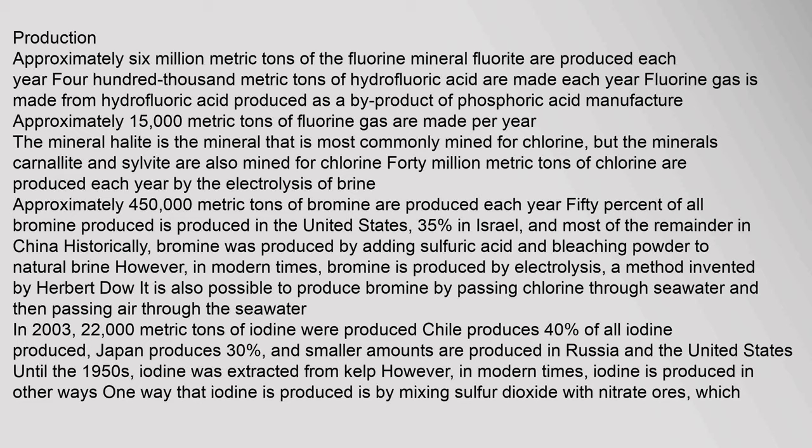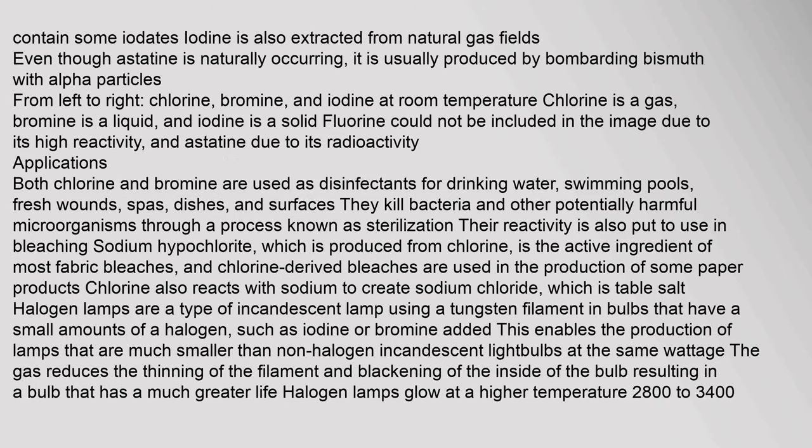Historically, bromine was produced by adding sulfuric acid and bleaching powder to natural brine. In modern times, bromine is produced by electrolysis, a method invented by Herbert Dow. It is also possible to produce bromine by passing chlorine through seawater and then passing air through the seawater. In 2003, 22,000 metric tons of iodine were produced. Chile produces 40% of all iodine, Japan produces 30%, and smaller amounts are produced in Russia and the United States. Until the 1950s, iodine was extracted from kelp. Today, iodine is produced by mixing sulfur dioxide with nitrate ores containing iodates, and also extracted from natural gas fields. Astatine is usually produced by bombarding bismuth with alpha particles.